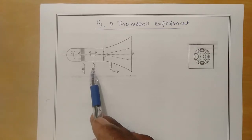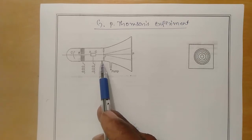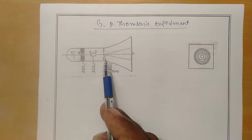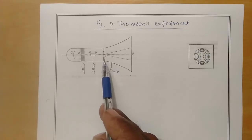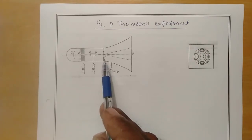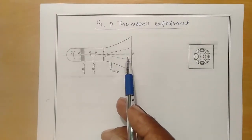The electrons coming out of the cylinder are made to pass through a gold foil F, which has a thickness of the order of 10^-7 to 10^-8 meters. The electrons coming out of this gold foil are then made to fall on a photographic plate P or a fluorescent screen.